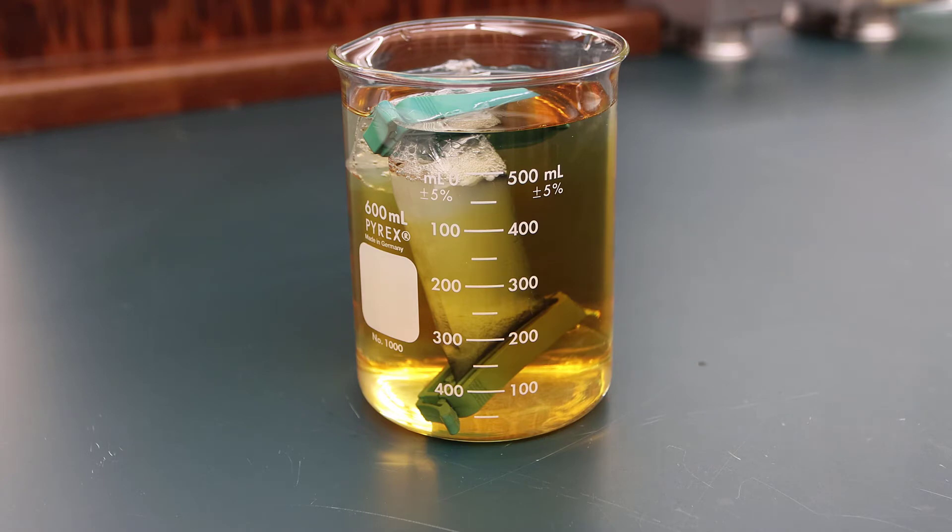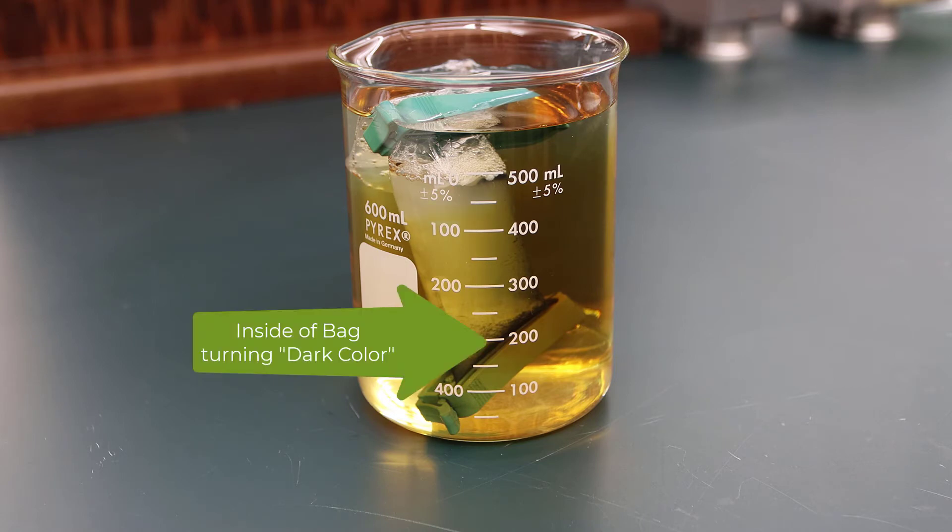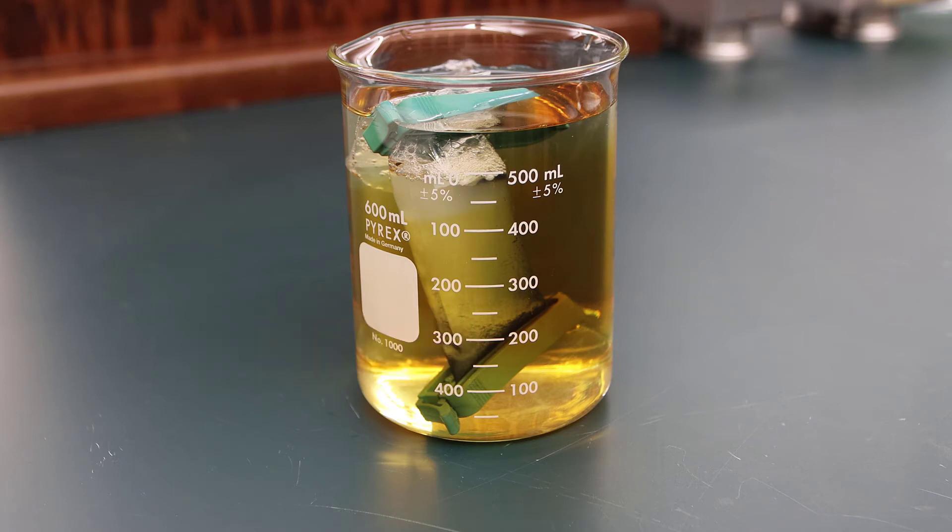Back to our dialysis bag in our beaker. To speed things up, I'm going to increase the video speed by 15 times so we can get to the results quicker. Notice if you will - and this is important for one of the results - you'll notice that the bag is turning a dark color, a dark blue or dark purple color. You can see this change in the color of the bag, and that color change is on the inside of the bag, which is important as one of the results.